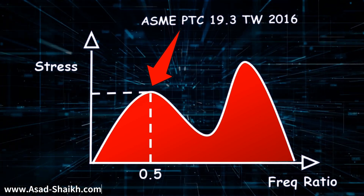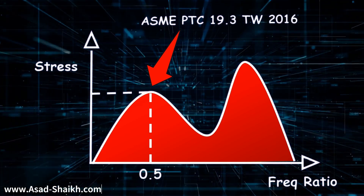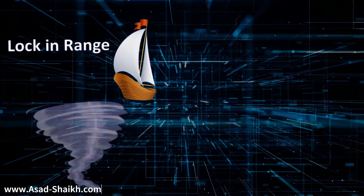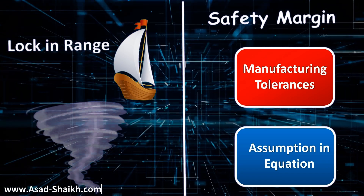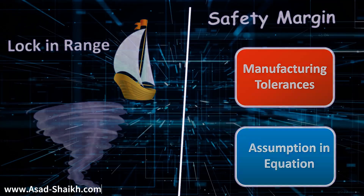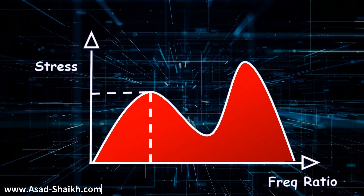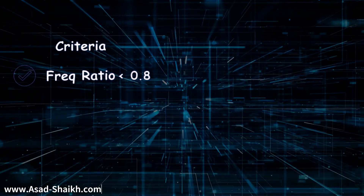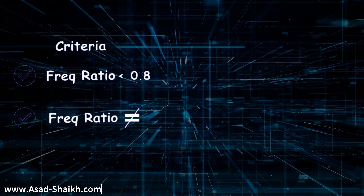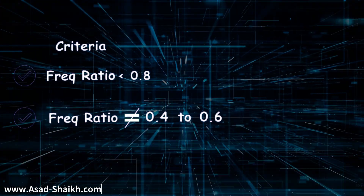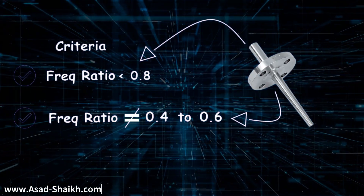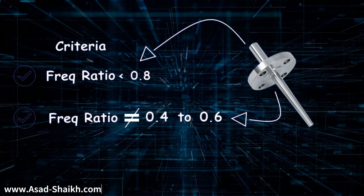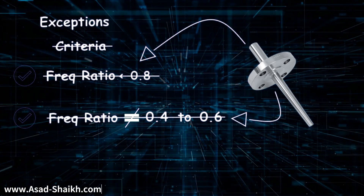That issue was addressed and the recent ASME PTC 19.3 TW 2016 version accounts for this frequency as well. Similar to the lock-in range and safety margin reasoning, instead of 0.5, ASME PTC has a smarter criteria: the thermowell must not be in the frequency zone between 0.4 and 0.6. This gives us the second criteria. In summary, the two criteria are: first, frequency ratio must be less than 0.8; second, frequency ratio must not be between 0.4 and 0.6. If a thermowell passes both criteria, it has passed the wake frequency calculation.